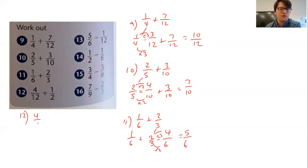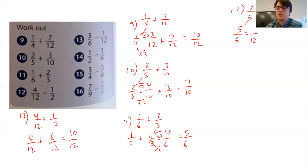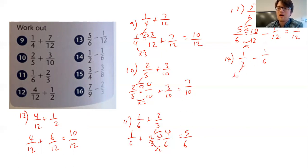Question twelve: four twelfths add a half. Half as a twelfth — well, half of twelve is six — so it's the same as four twelfths add six twelfths, which is ten twelfths. Question thirteen — subtraction now: five sixths minus one twelfth. Six goes into twelve, so I'm going to make twelve my common denominator. Times by two, times by two: ten twelfths minus one twelfth gives me nine twelfths. Question fourteen: half minus one sixth. Two goes into six, so six is going to be my common denominator. A half is the same as three sixths — three is half of six — minus one sixth is two sixths.